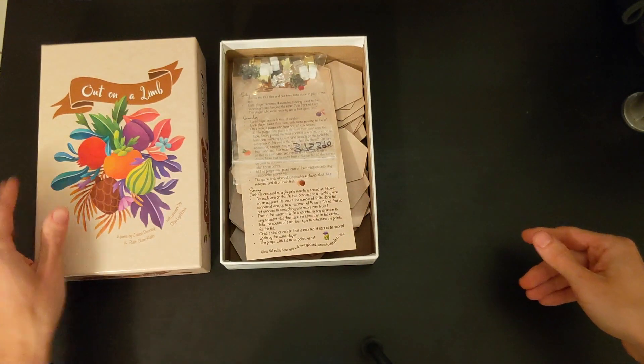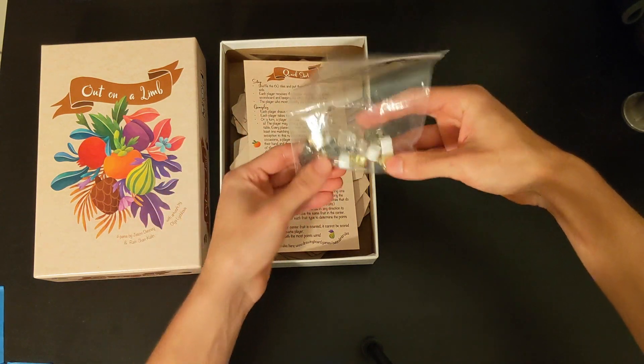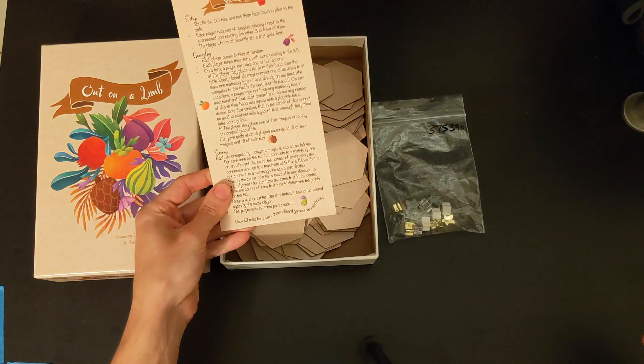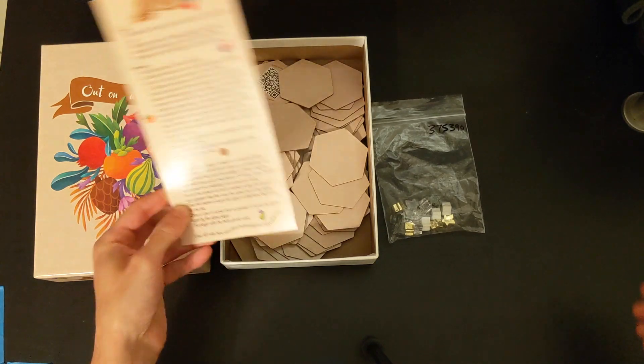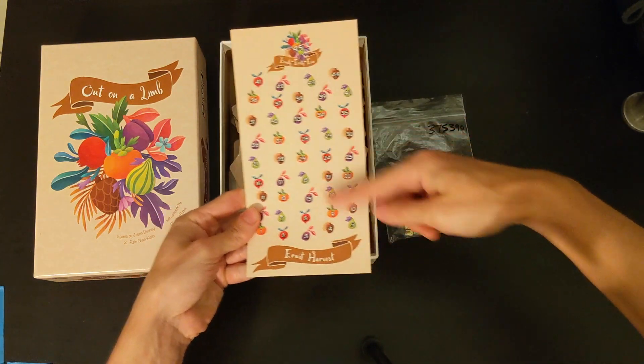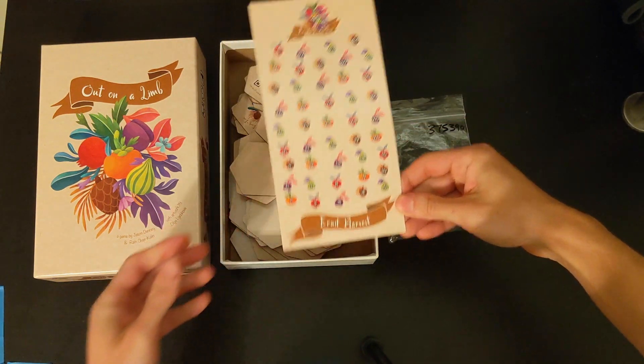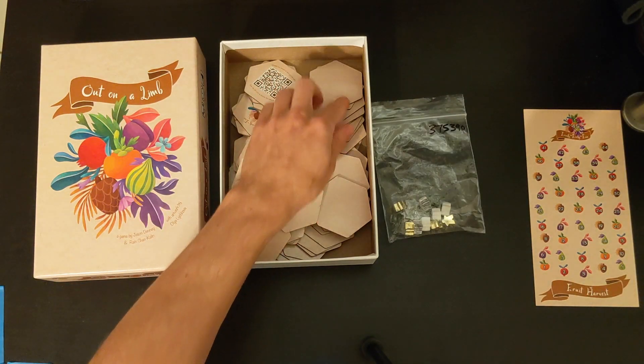What's in this box? Got some meeples. A quick start guide, which if you're watching this you probably don't need. On the back is the score chart, which we only need at the end of the game. So I'm going to set that aside. We got the tiles in here.